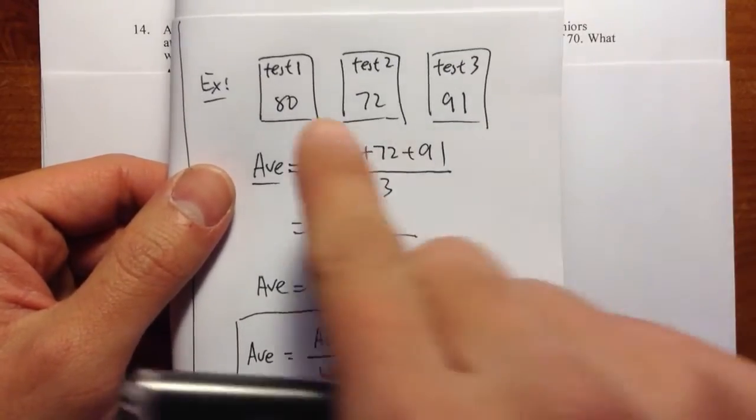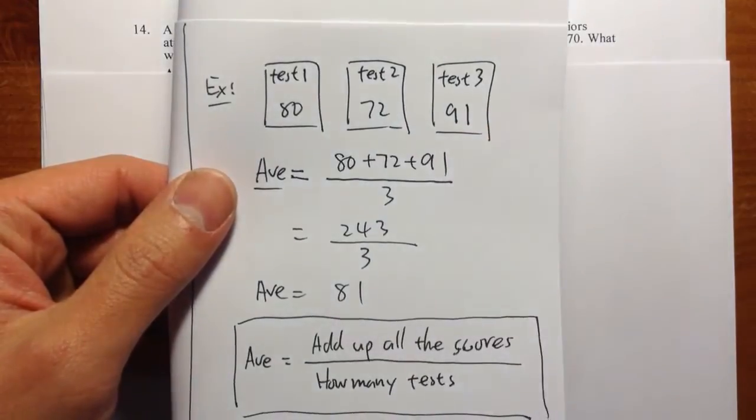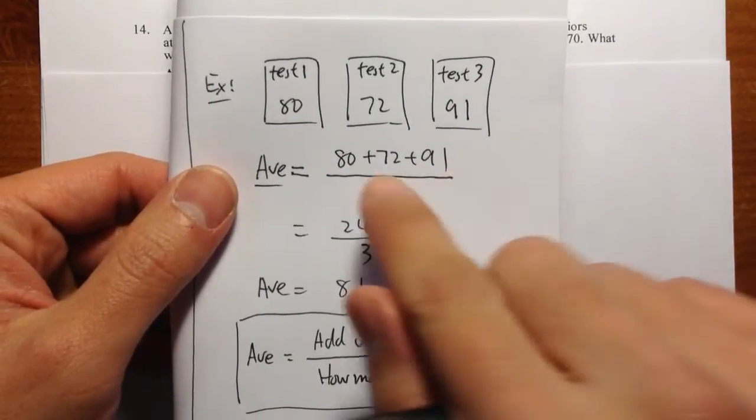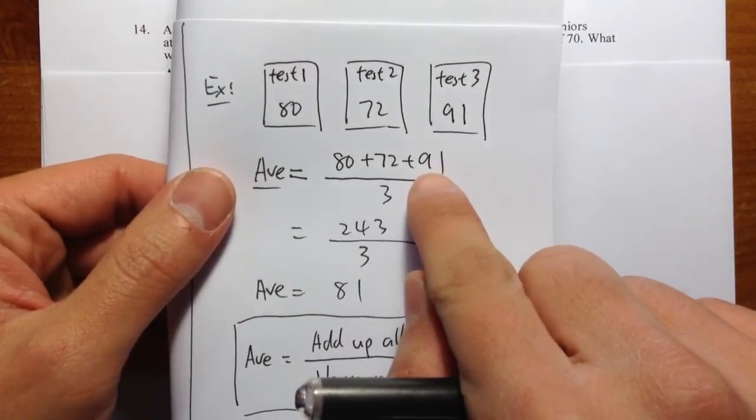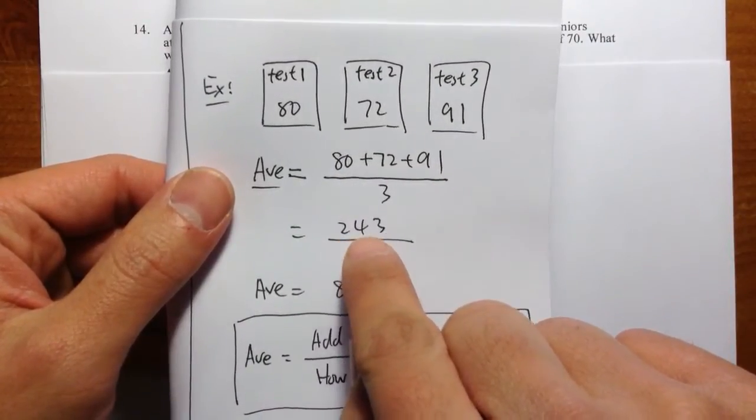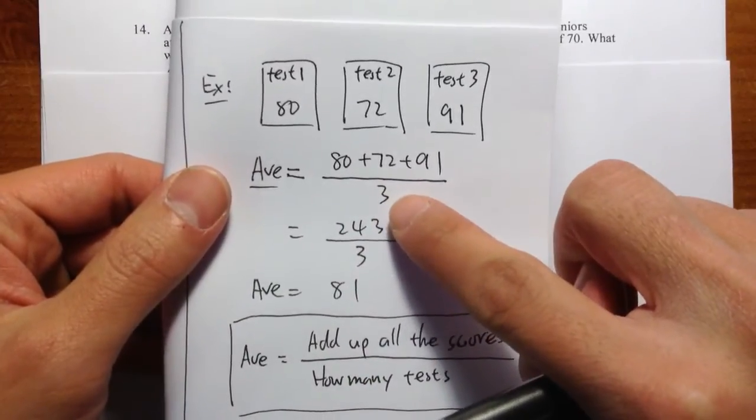If you take 3 tests, and you got 80, 72, and 91 on these tests. To find the average, you have to add up 80 plus 72 plus 91. You got 243.